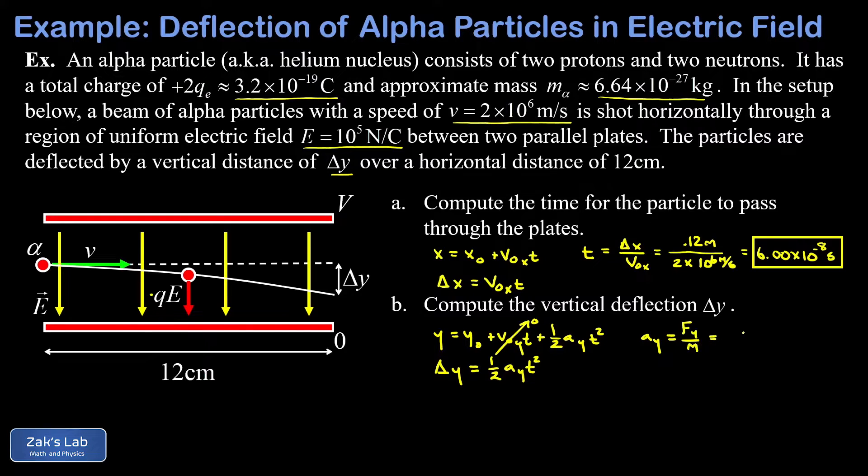The Y force is the electric force, Q times E. And the mass is the mass of an alpha particle, so I'll call that M alpha. Plugging in the numbers here, we have a charge of 3.2 times 10 to the negative 19 coulombs, an electric field strength of 10 to the fifth newtons per coulomb.